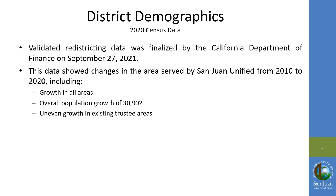Final 2020 Census data was finalized on September 27, 2021. The data showed that from 2010 to 2020, San Juan Unified's population grew by 9.6 percent, or 30,902 residents. While every trustee area grew during that time, areas all grew at different rates.